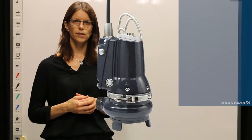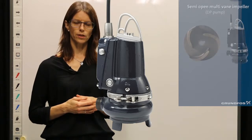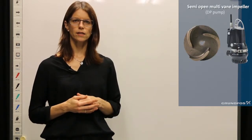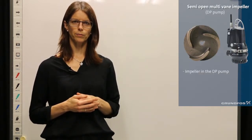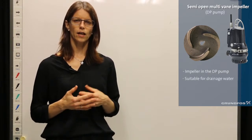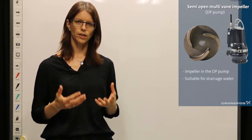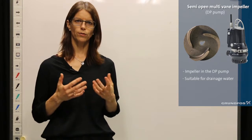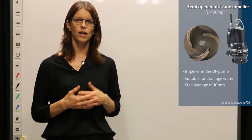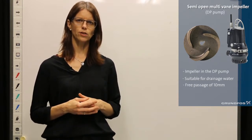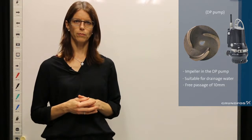First we have the semi-open multi-vane impeller. This is the impeller in the DP pump, and it is suitable for handling drainage water with very small particles. It has a free passage of 10 millimeters.